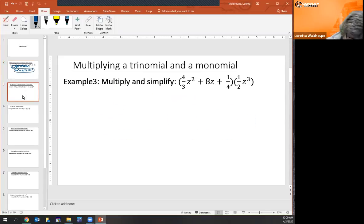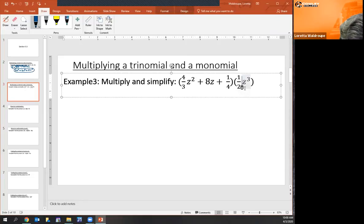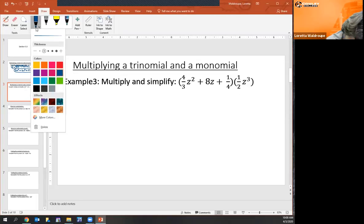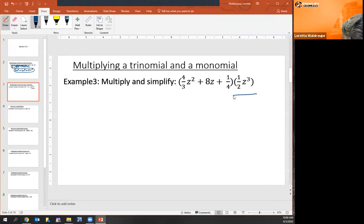Sometimes instead of that monomial term being at the front of the parentheses, it can be here at the end, and that's still okay. You're just taking each one of the terms in the parentheses times the one half z cubed.